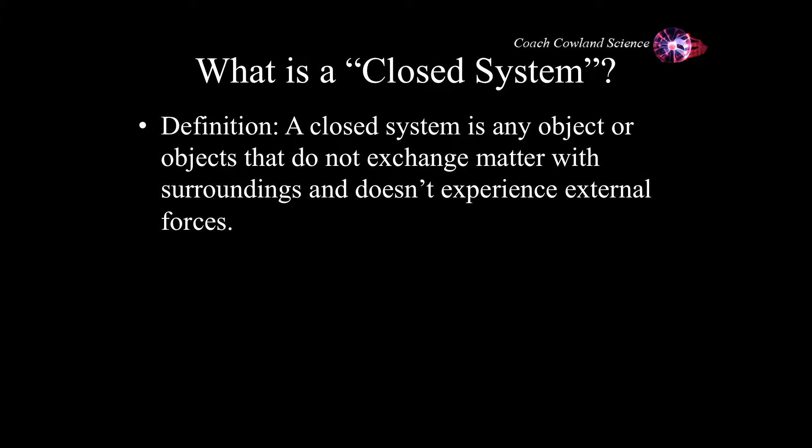To define a closed system: a closed system is an object or scenario, probably a better word, where objects don't exchange matter with the surroundings and don't experience external forces. As you can imagine, external forces are around everywhere. Gravity is experienced everywhere on Earth, and even if it's not Earth's gravity there is gravitational experience from other planets. I mean, the tides happen because of the moon's gravitational forces. So you can see that it's very difficult to get to a place where there is a perfectly closed system.